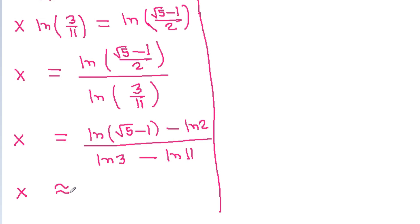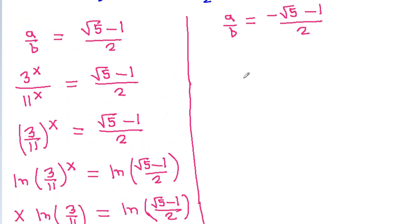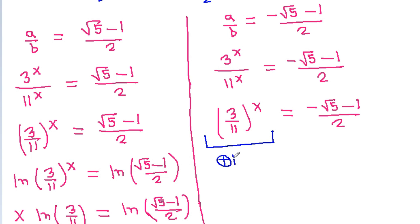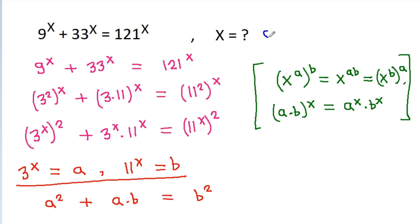This gives x ≈ 0.37. For the negative root, 3^x / 11^x = (-√5 - 1)/2, but since (3/11)^x is always positive and the right-hand side is negative, this case has no solution. Therefore, x = 0.37.